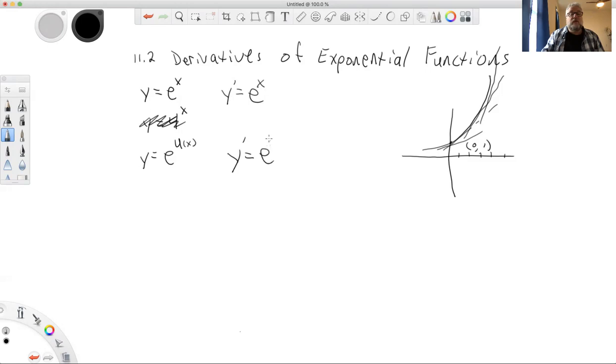the derivative is going to be, we'll follow this pattern for the whole function. The derivative is going to be e to the u. But then we're going to multiply by the derivative of the group inside the exponent. We're going to have a u prime down there. And this is the general pattern for all the derivatives we're going to do for exponential functions.